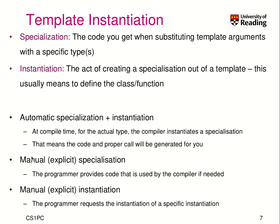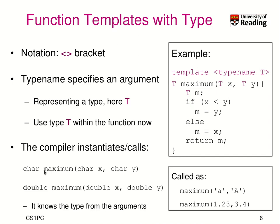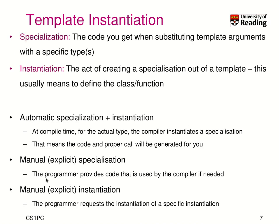There's also the option to manually, meaning explicitly, specialize a template for a certain data type. This is needed when you may have to change the logic a little bit for one or two data types while for most the logic stays the same. The programmer provides the code that is then used and instantiated by the compiler as needed. Lastly, you can also manually instantiate a type — you can say you want to instantiate the function maximum with a specific signature even without calling it. That is sometimes useful as well.